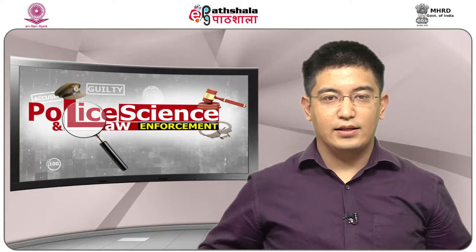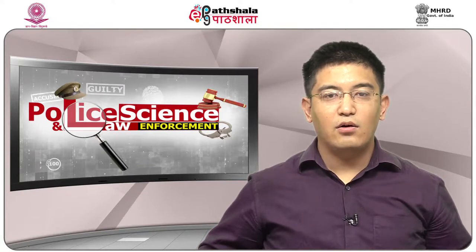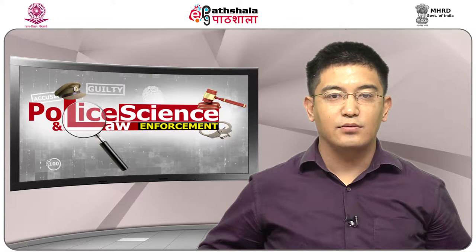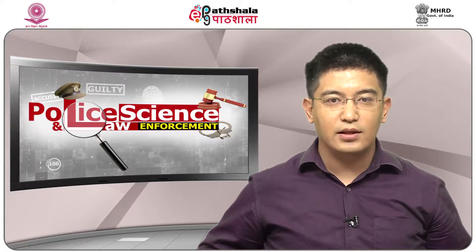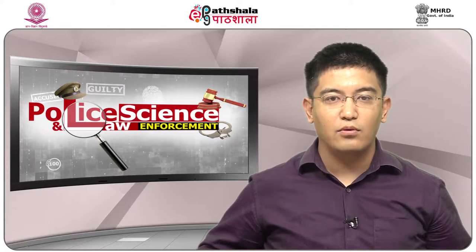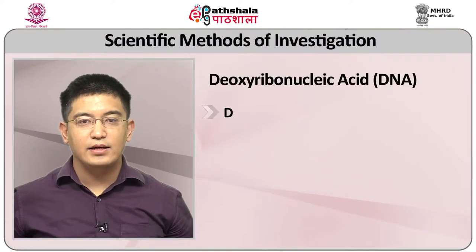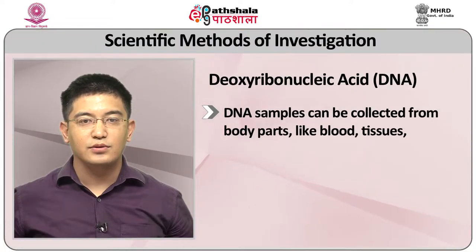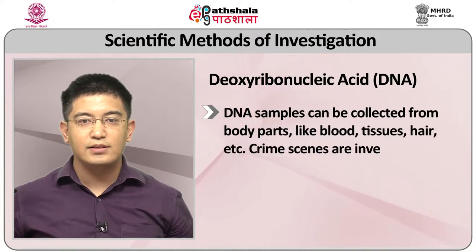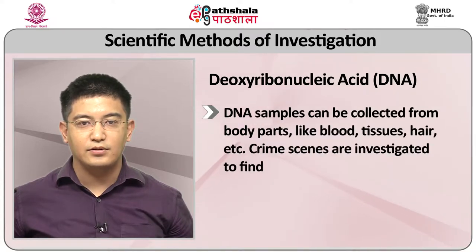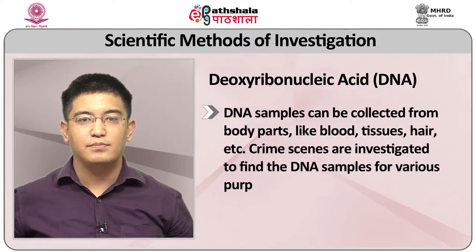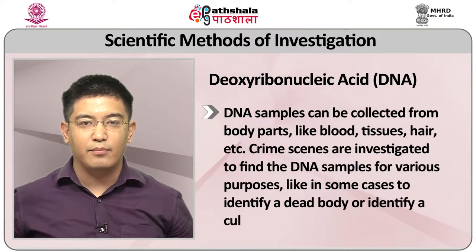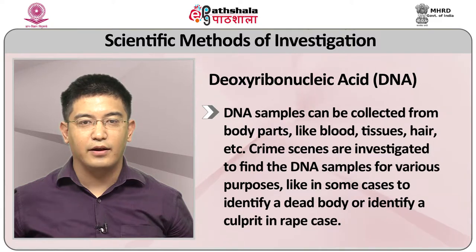Another method is DNA analysis. Deoxyribonucleic acid, DNA, is a nucleic acid which contains the biological and genetic information for all known living organisms. The DNA samples can be collected from body parts like blood, tissues, hair, etc. Crime scenes are investigated to find the DNA samples for various purposes, like in some cases to identify a dead body or identify a culprit in a rape case.